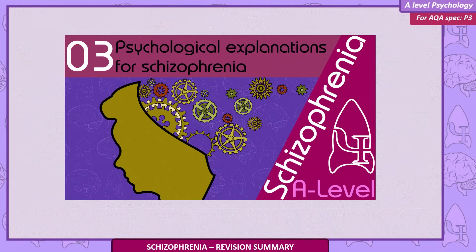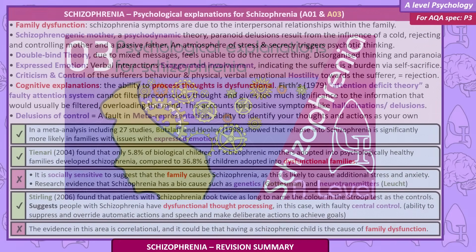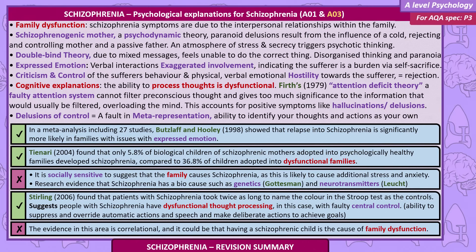Psychological explanations for schizophrenia: family dysfunction. Schizophrenia symptoms are due to the interpersonal relationships within the family. The schizophrenogenic mother — a psychodynamic theory — proposes that paranoid delusions result from the influence of a cold, rejecting and controlling mother and a passive father, creating an atmosphere of stress and secrecy that triggers psychotic thinking.